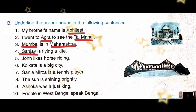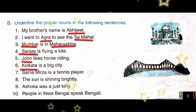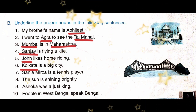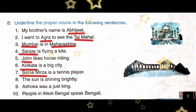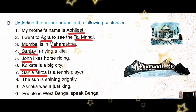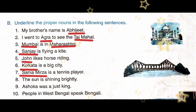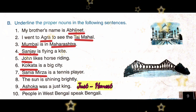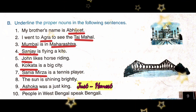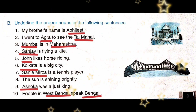Next: 'John likes horse riding.' Here, John is a proper noun. 'Kolkata is a big city.' Kolkata is a proper noun. 'Sania Mirza is a tennis player.' Sania Mirza is a proper noun. 'The sun is shining brightly.' Recall, proper nouns always begin with capital letters, so sun is not beginning with a capital letter — it is not a proper noun. 'Ashoka was a just king.' Ashoka is a proper noun. 'People in West Bengal speak Bengali.' West Bengal and Bengali are both proper nouns.